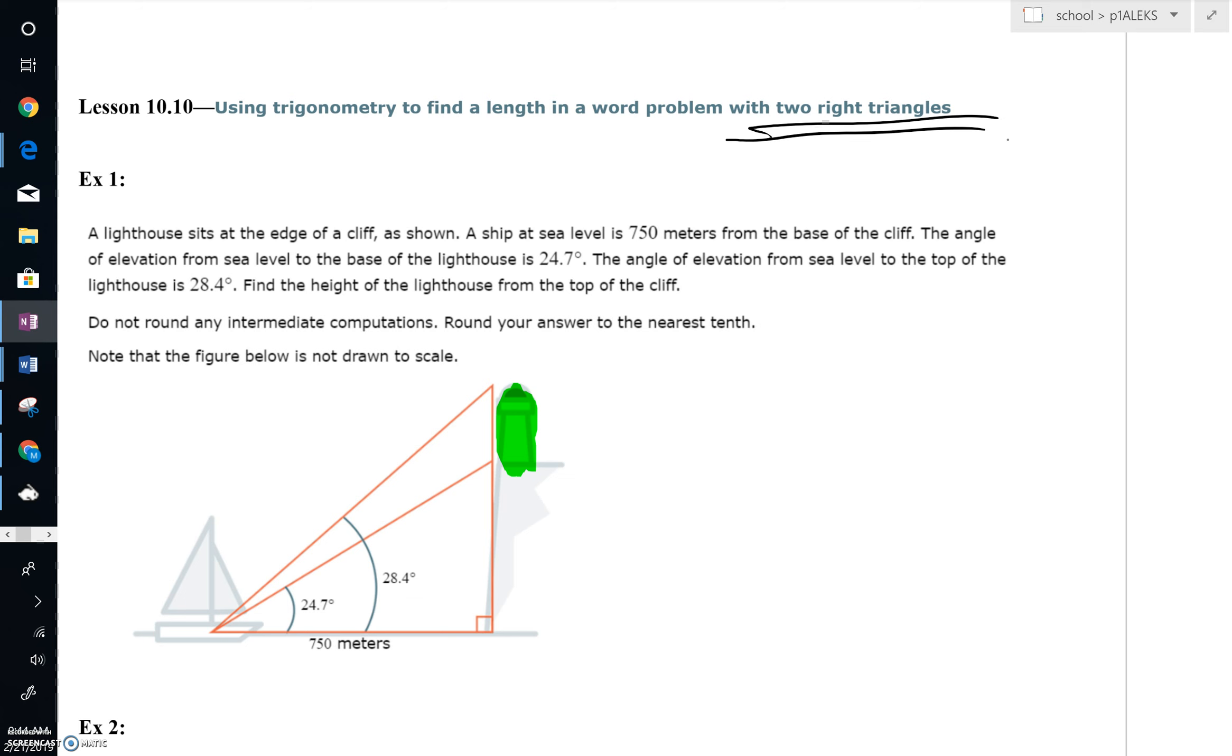Look at example one. Thankfully we have a picture, a lighthouse. I've highlighted that in green. It sits at the edge of a cliff. A ship at sea level, 750 meters away from the base of the cliff. We've got an angle of elevation to the base, that is the bottom of that lighthouse, that's 24.7 degrees, and an angle of elevation to the top of the lighthouse, that's 28.4. So find the height of the lighthouse from the top of the cliff. In other words, find the length of that green lighthouse here, how tall is it, just from bottom to top right here. We're trying to find that height.